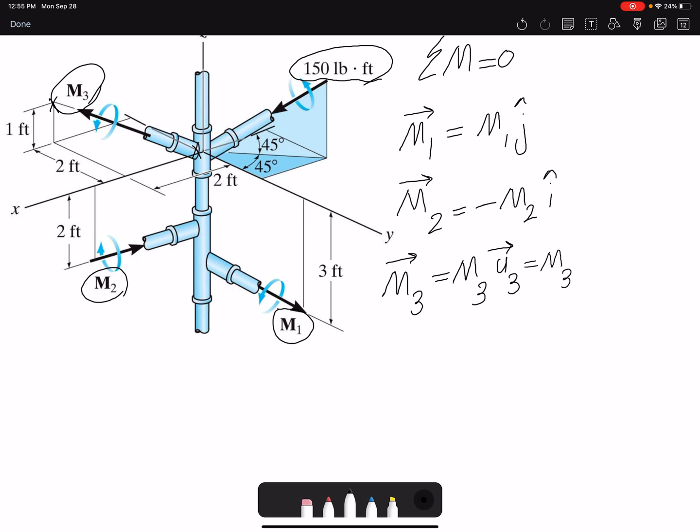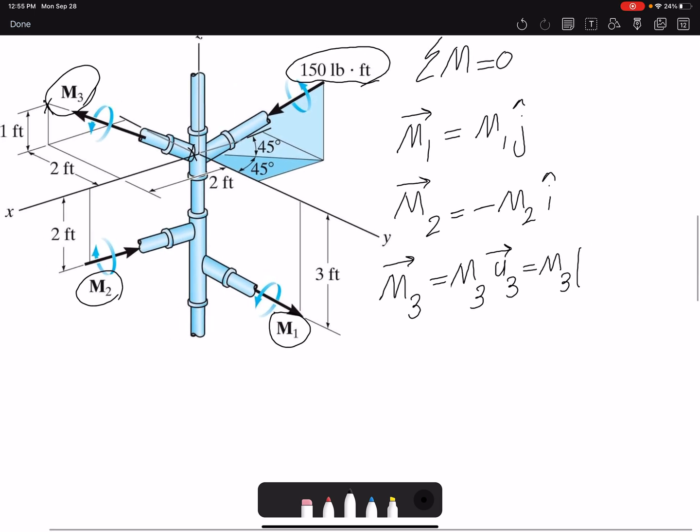The unit vector for my moment 3 is simply the position vector divided by its magnitude. So that would be 2i towards positive i, negative 2j plus 1 unit in positive k, and the magnitude is 3. So if I simplify M3, that would be the magnitude of M3, which is unknown, times 2/3 i minus 2/3 j plus 1/3 k.